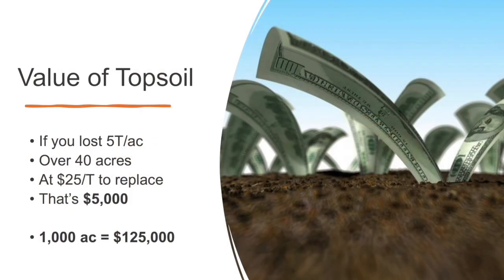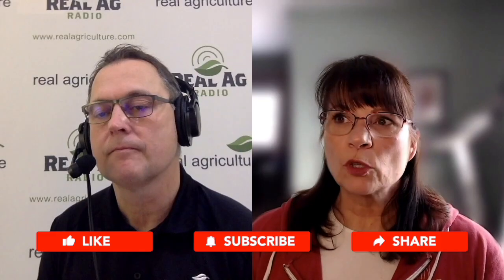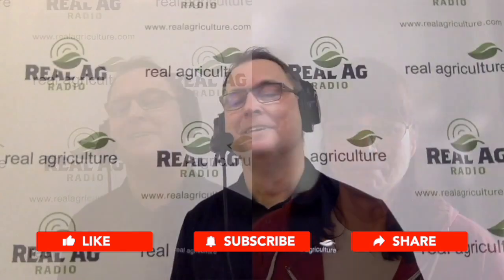The bottom line: if you do the math, over 1,000 acres you can lose up to $125,000 in value from the nutrients lost. Around my area, it's about $25 a ton of good black topsoil. If you scrape off just a dime's width for an acre, that comes to five tons. If I went out to a farmer's place and said I'm just going to scrape off only a dime's width — that's five tons an acre — most farmers would probably kick me off their land pretty quickly.